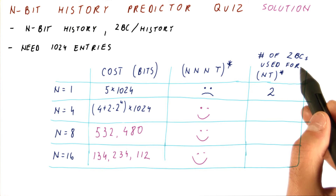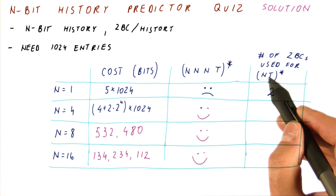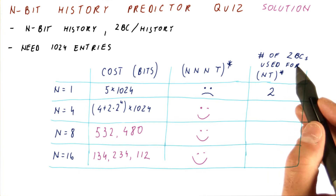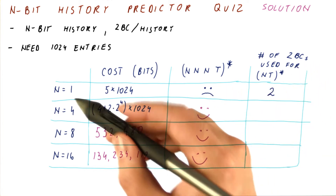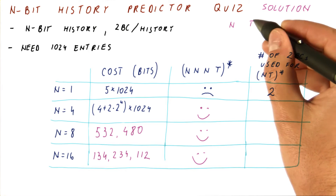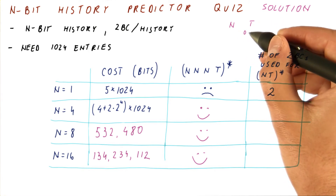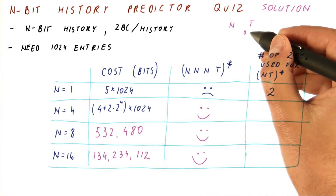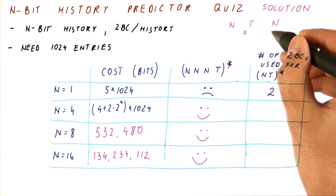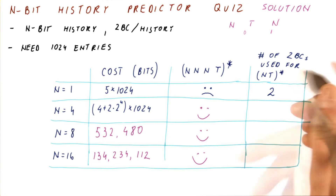Finally, how many of those two-bit counters do we actually use for the not-taken, taken, not-taken, taken pattern? For n equals one, when we need to predict the taken branch, we have a history of just zero, because it's a single-bit history. When we need to predict the not-taken branch, we have a history of just one. So we are using both of these counters.